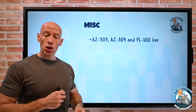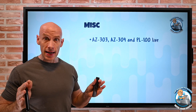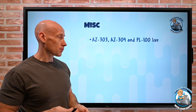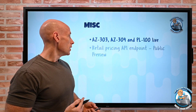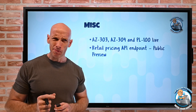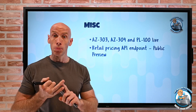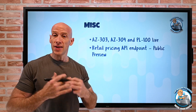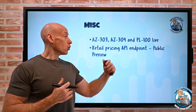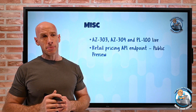In miscellaneous news: the new architecture exams, AZ-303 and AZ-304, have gone live and the old ones have been retired. If you took the beta exam, within the next 10 days you should find out your result. PL-100, the Power Platform App Maker exam, is also live — you can now take it and get instant results. There's also a new retail pricing API endpoint in preview. Without needing to authenticate to this endpoint, you can programmatically get pricing for retail SKUs and work out what your costs will be — no Azure pricing calculator or portal needed.